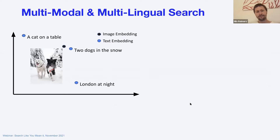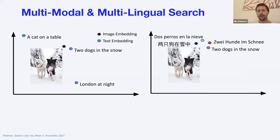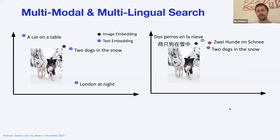It's also not limited to text. You can encode images in a vector space and encode text in the vector space, and do image search — for example, searching 'two dogs in the snow' returns a picture of two dogs. It's also not limited to one language. With a multilingual model, you can encode text in many different languages — German, Spanish, Russian, Arabic, Turkish — and always get the same relevant image, hit, audio, or video result.